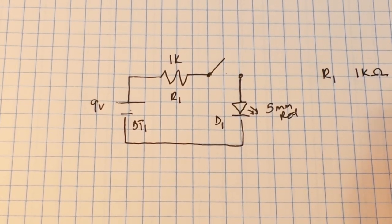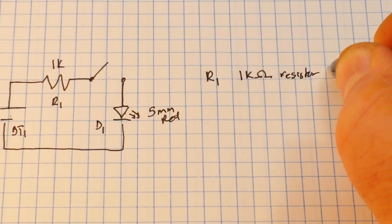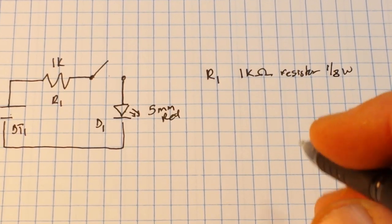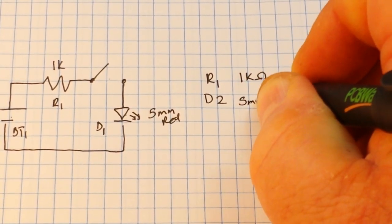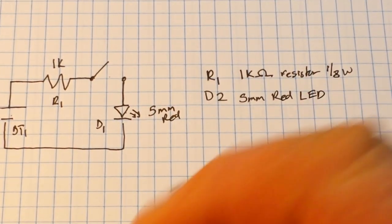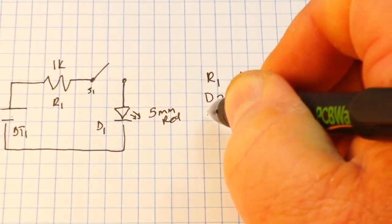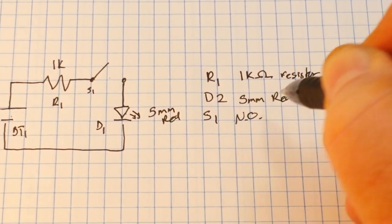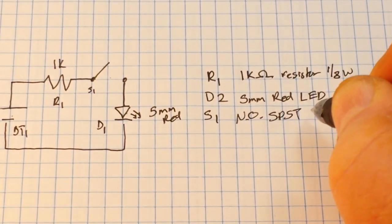kilohm resistor, and it might even be more information along the lines of 1/8 watt something like that. Then we have D2 which would be a 5 millimeter red LED. Switch, didn't I? That's one. So S1 might be labeled as a NO normally open SPST single pole single throw switch.